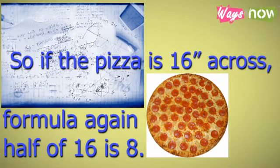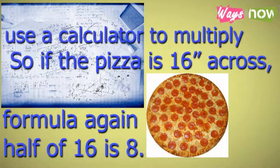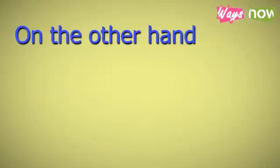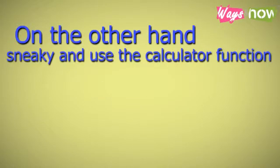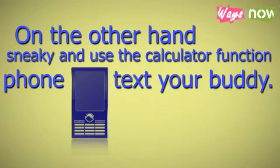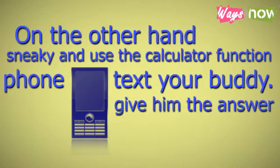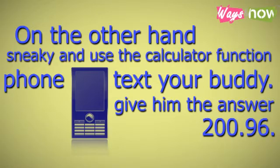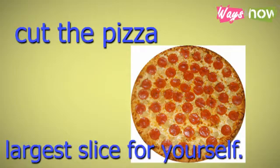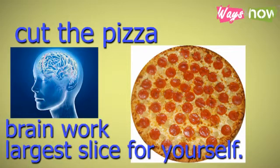So if the pizza is 16 inches across, half of 16 is eight. Going by the formula again, you can use a calculator to multiply: area equals 3.14 times 8 times 8. Or you can be sneaky and use the calculator function on your phone while pretending to text your buddy. Then you give him the answer — 200.96 — while he's still figuring it out. Go ahead and cut the pizza, reserving the largest slice for yourself. All that brain work deserves to be fed and sustained.